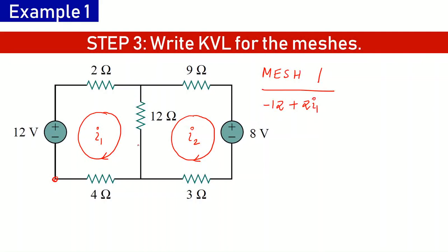Next is the 12-ohm resistance, which is common between the two meshes. The current through it from top to bottom is i1 minus i2, which is a fall in potential, so we take it with a positive sign — 12 ohms times (i1 minus i2). Then we have the 4-ohm resistance with current i1, again a fall in potential, so positive sign: 4 ohms times i1. Now we are back to the starting point, so the sum of all potential differences equals zero. This completes the KVL equation for mesh 1.